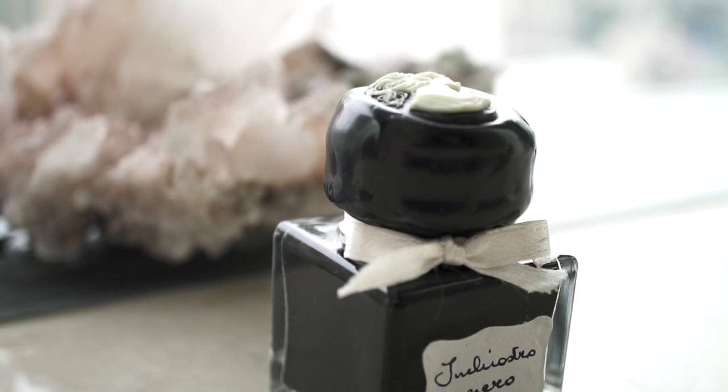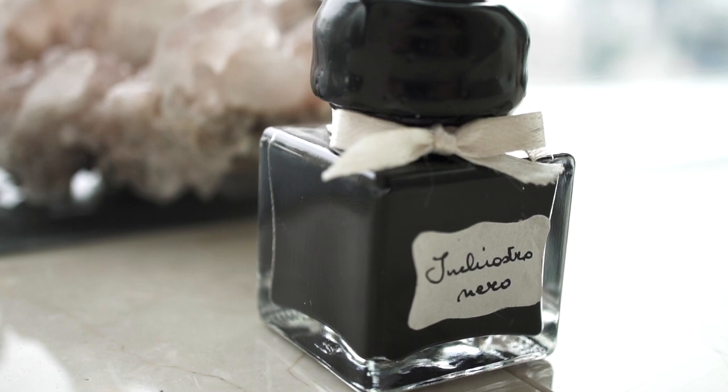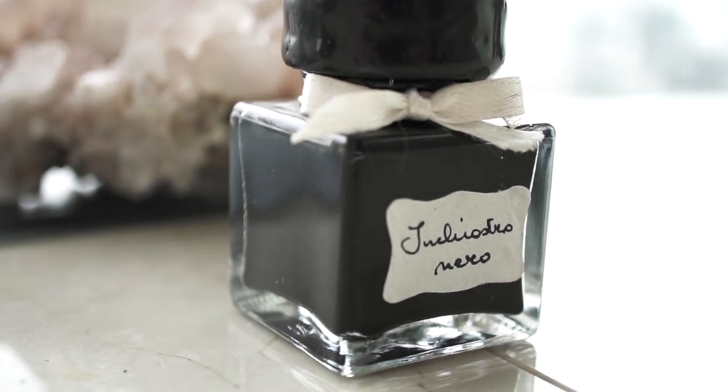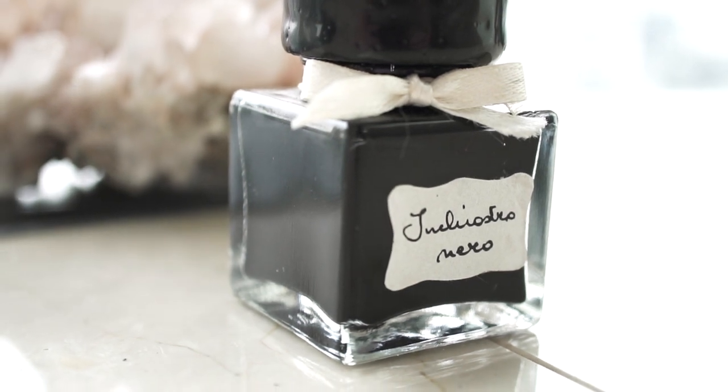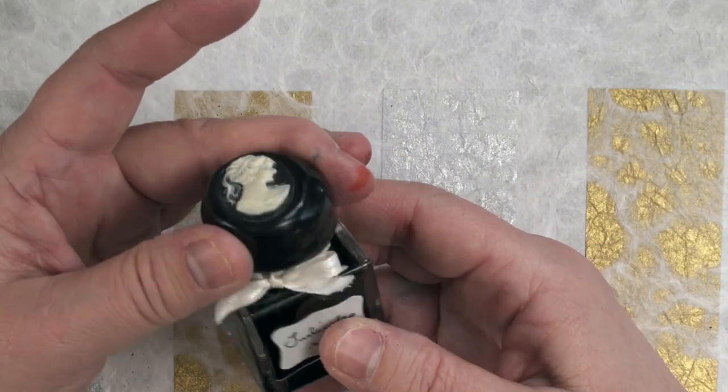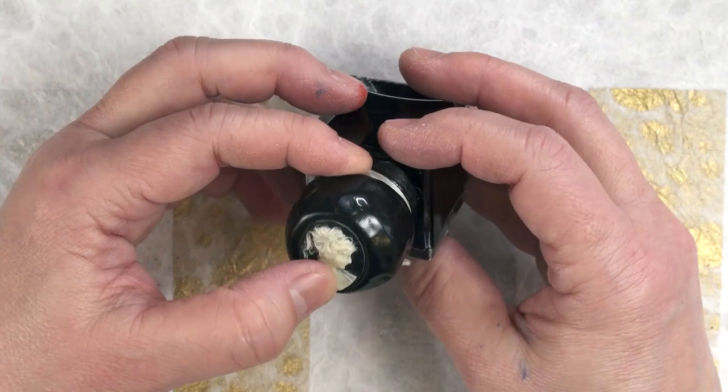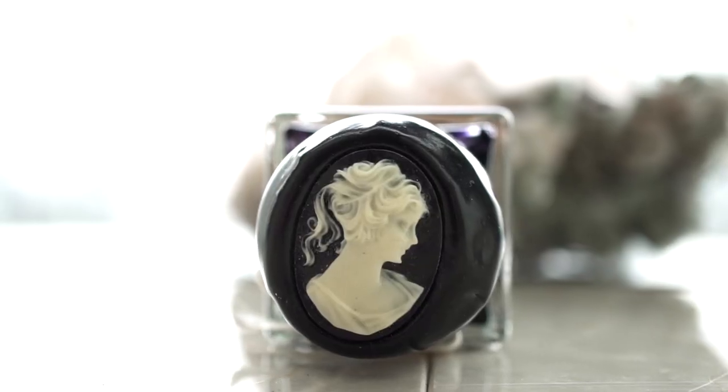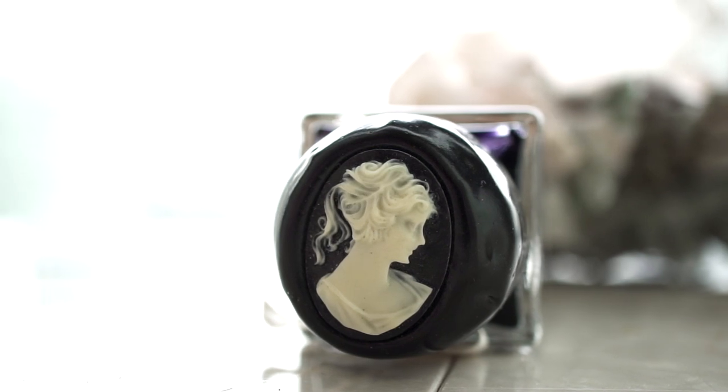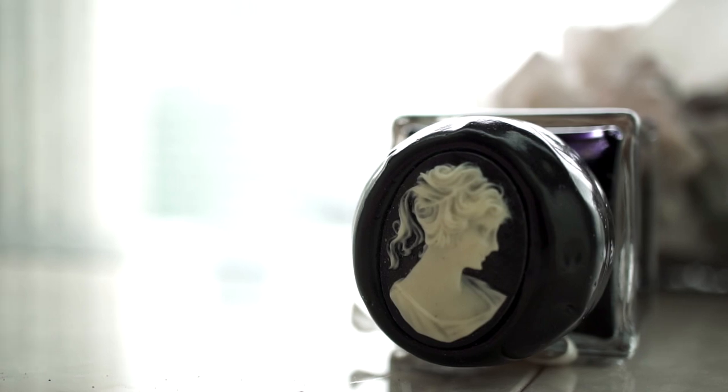This bottle is so gorgeous that I don't even use the ink. I don't typically use black ink, but I like this bottle so much I bought it just for the bottle. Rubinado has wax seal caps on all their inks. This one is particularly beautiful because it has a cameo on the top of the wax seal. So though I can't tell you what the ink's like, it looks really nice sitting on my desk. So I think that qualifies it as an interesting bottle.